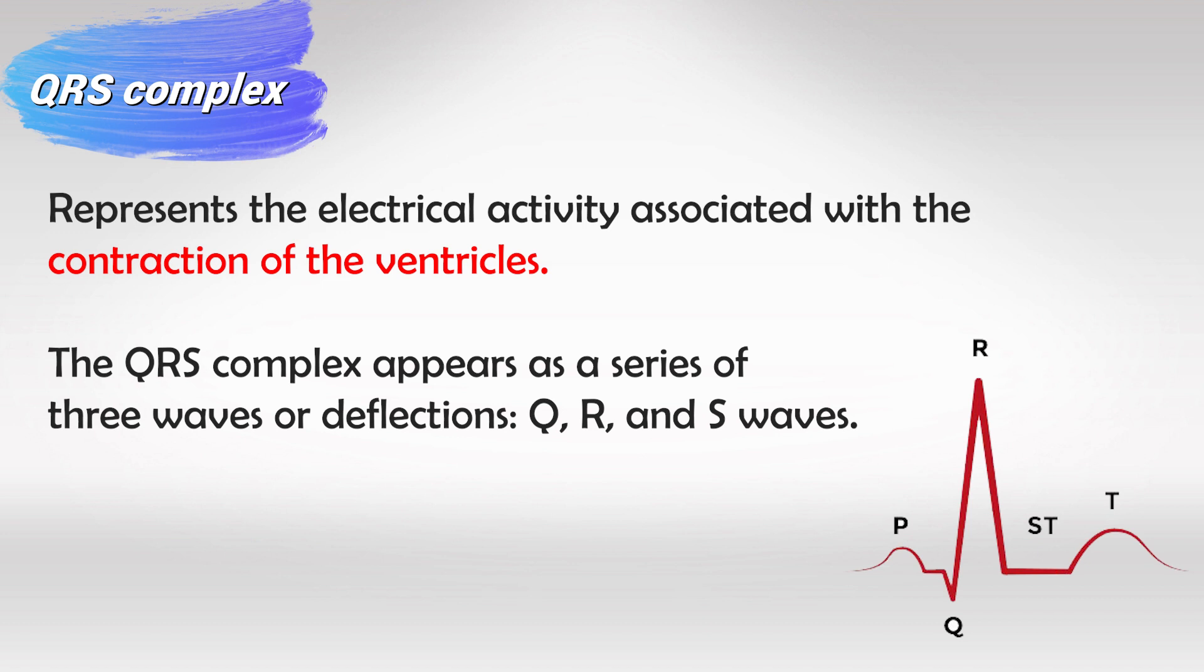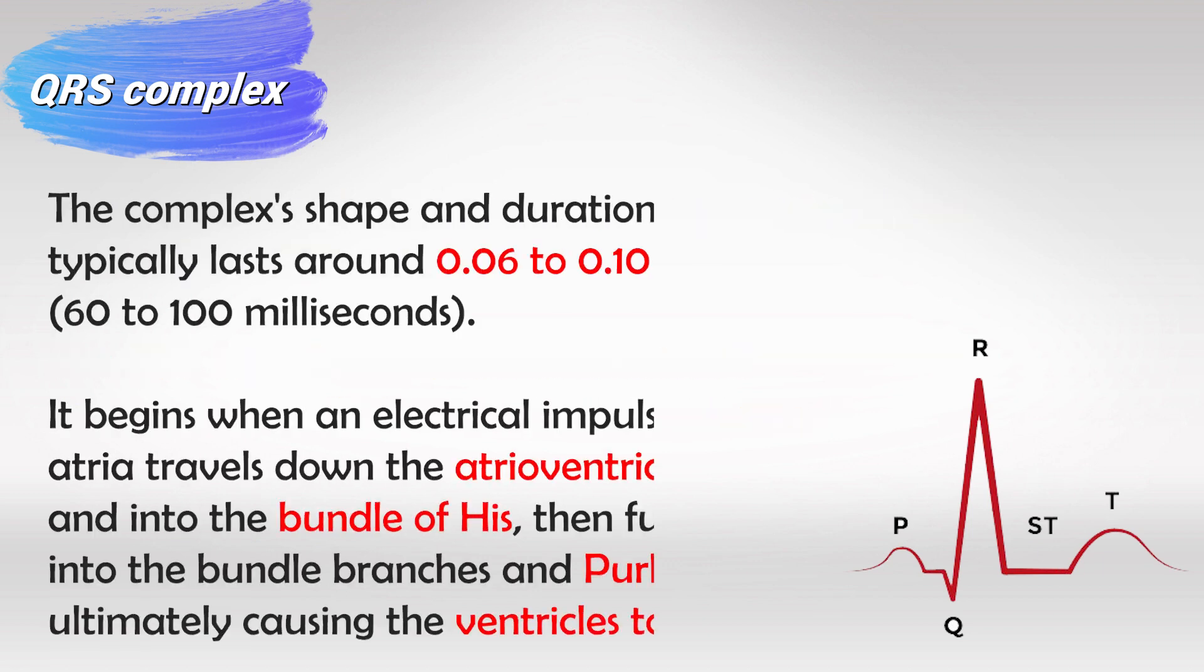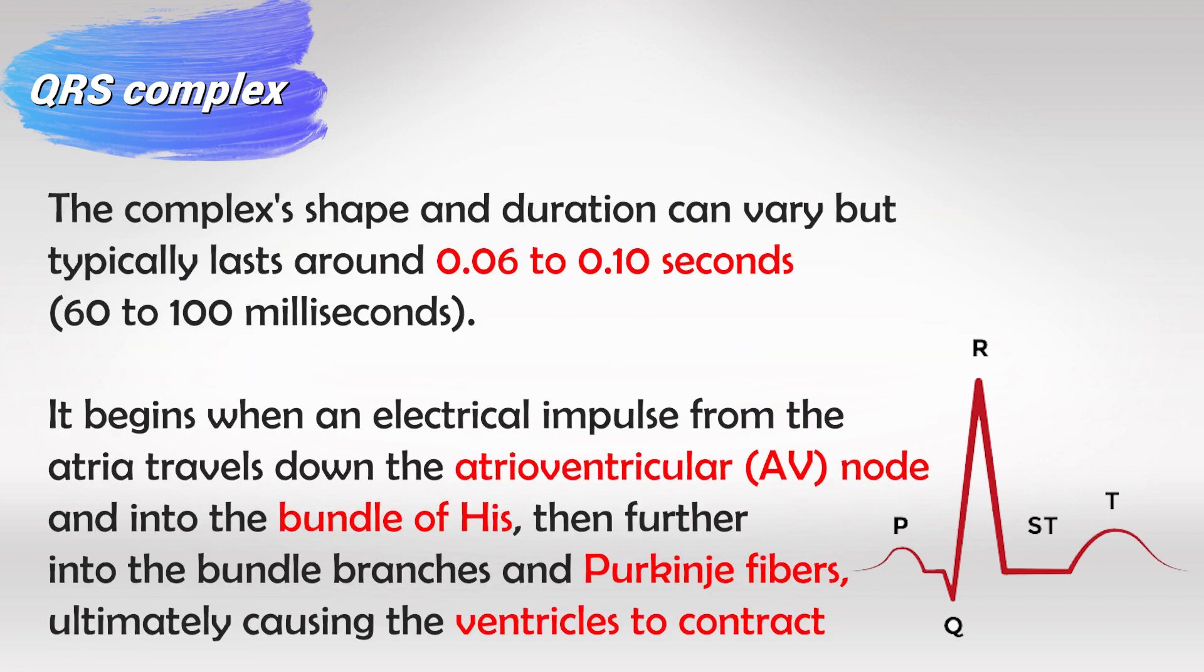In the same period of QRS complex, the atria will now relax so repolarize and it should have some influence in the ECG but this is overshadowed or masked by the QRS complex. Remember, whenever any muscle in the heart contracts or relaxes it will have some effects in the ECG. When the ventricles contract we will have the QRS complex and when they relax we will have the T wave. When the atria contracts we will have the P wave and when they relax the affected area will be masked by the QRS complex.